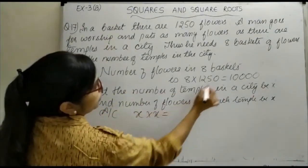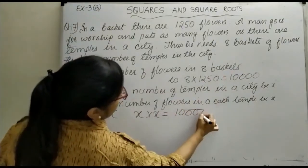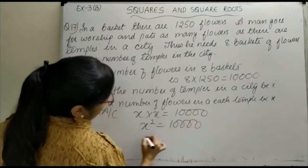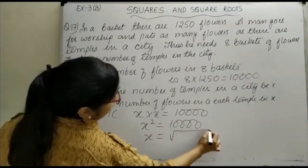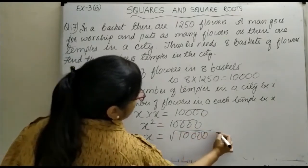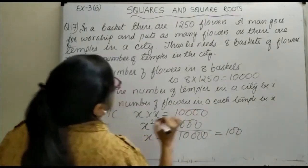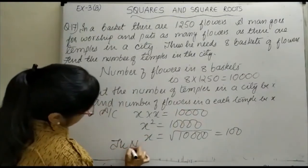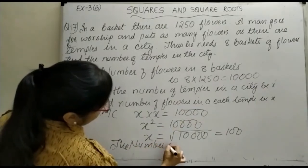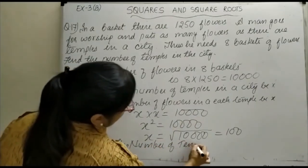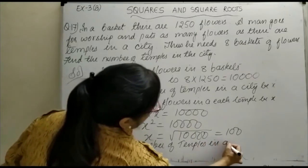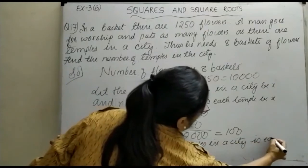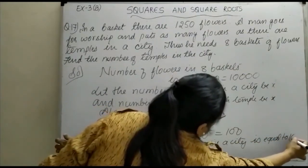According to the condition, x × x should equal the total number of flowers, that is 10,000. So x² = 10,000, and x = √10,000 = 100. Therefore, the number of temples in the city is 100.